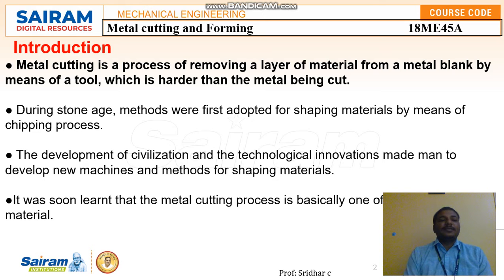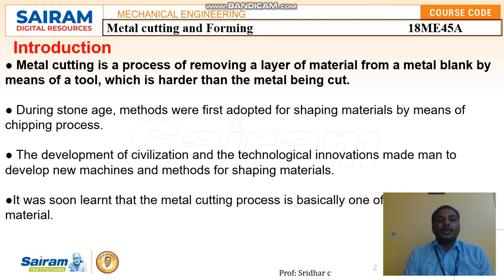Metal cutting is the process of removing a layer of material from a metal blank by means of a tool that is harder than the metal being cut. It is the process of removing excess or unwanted material to get the required shape or size. Cutting can also mean making two or more parts from a single material. The tool must always be harder than the workpiece so it can withstand the cutting force; otherwise, tool failure will occur.